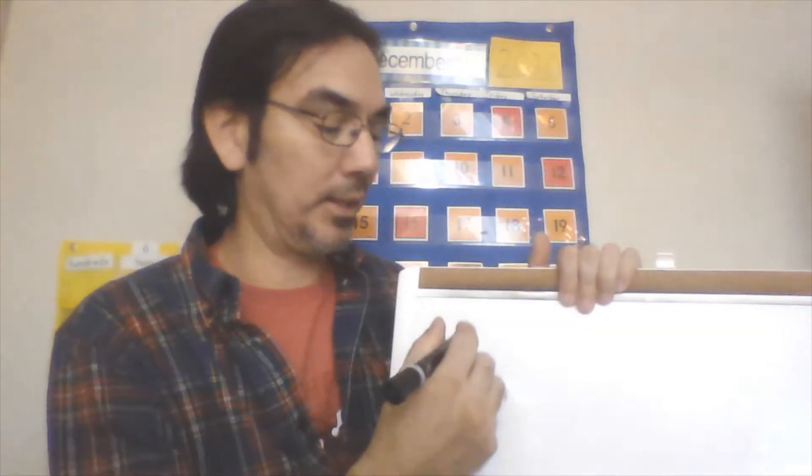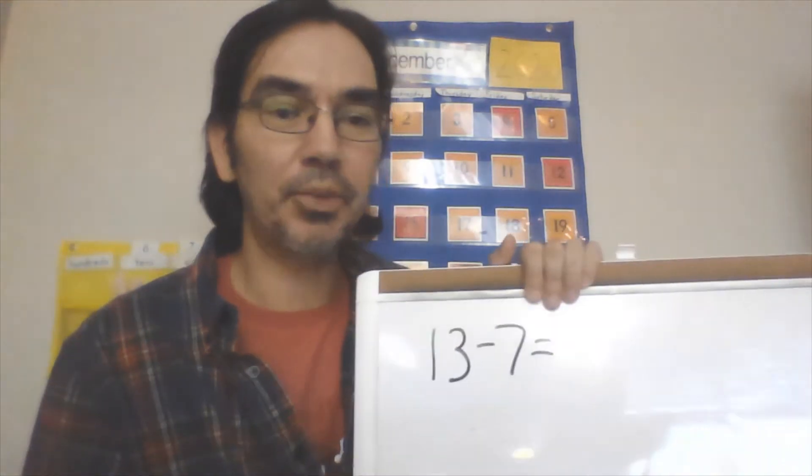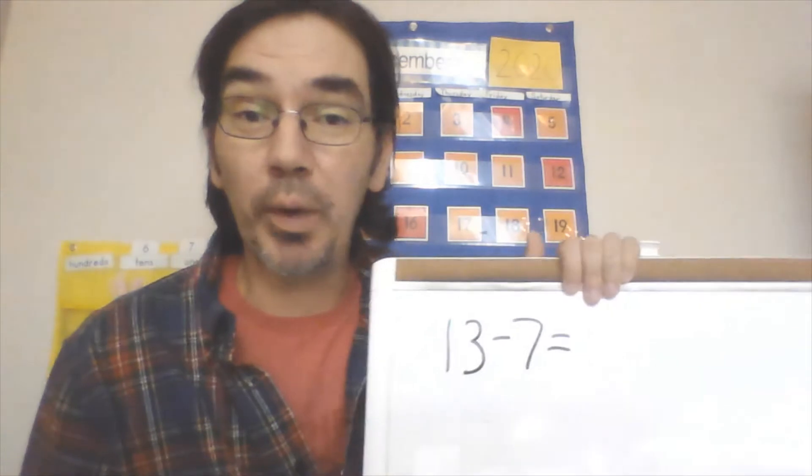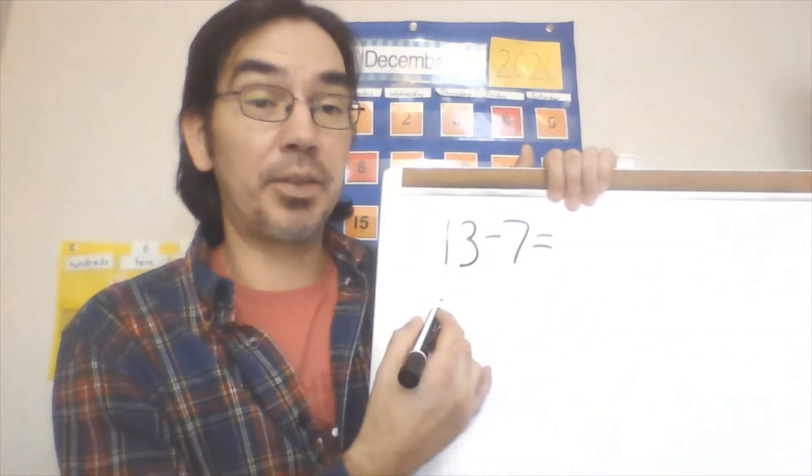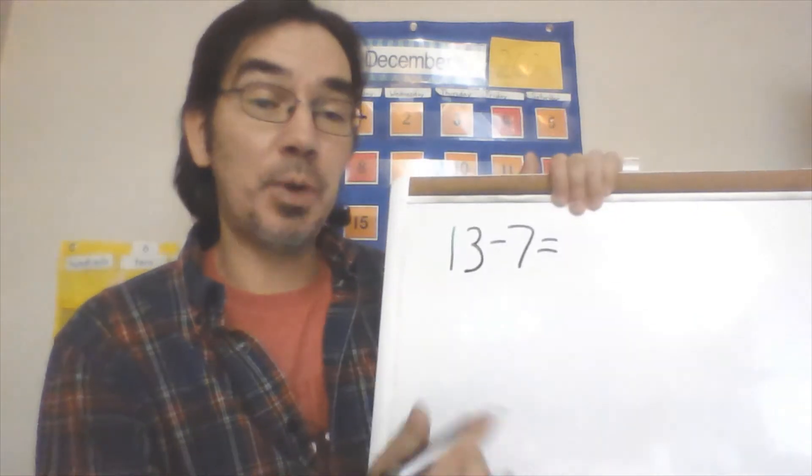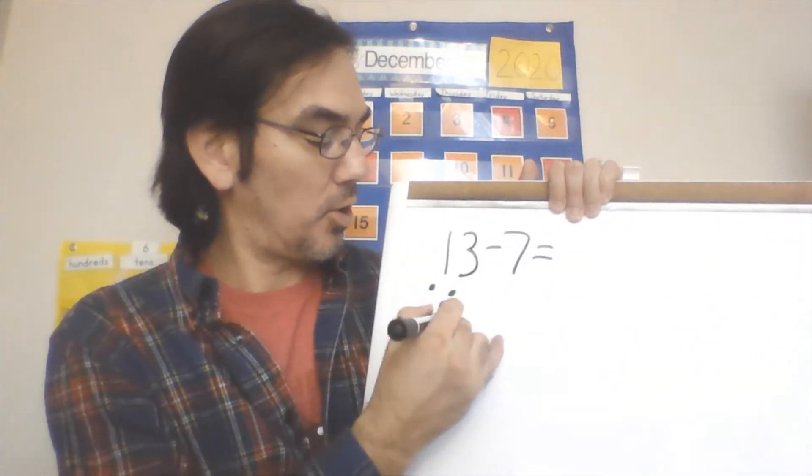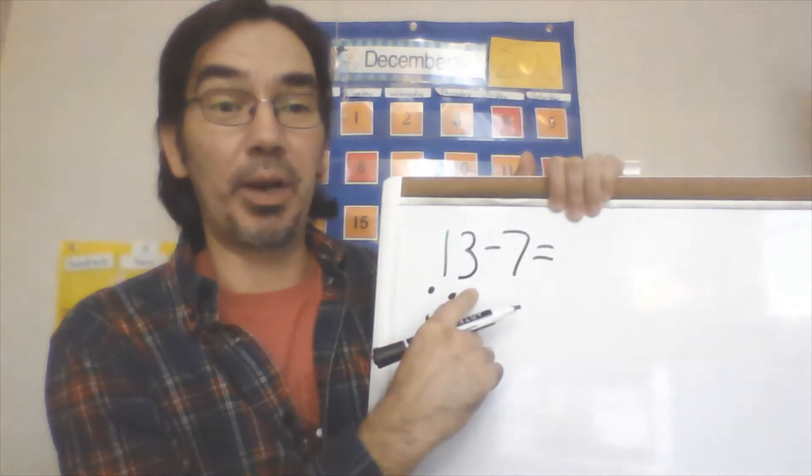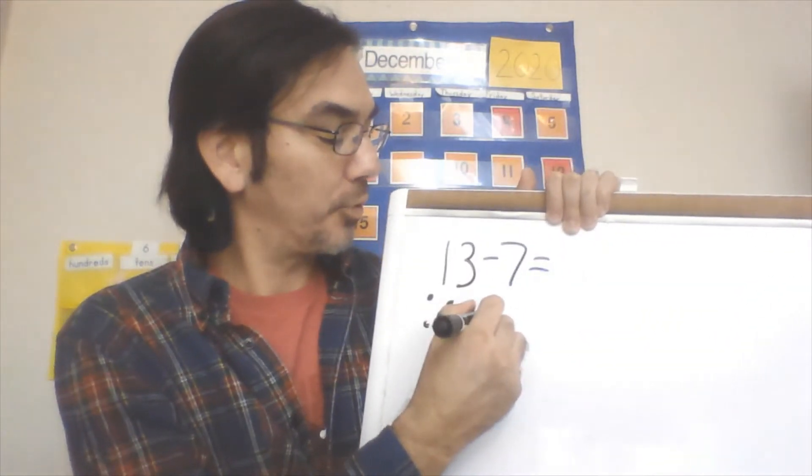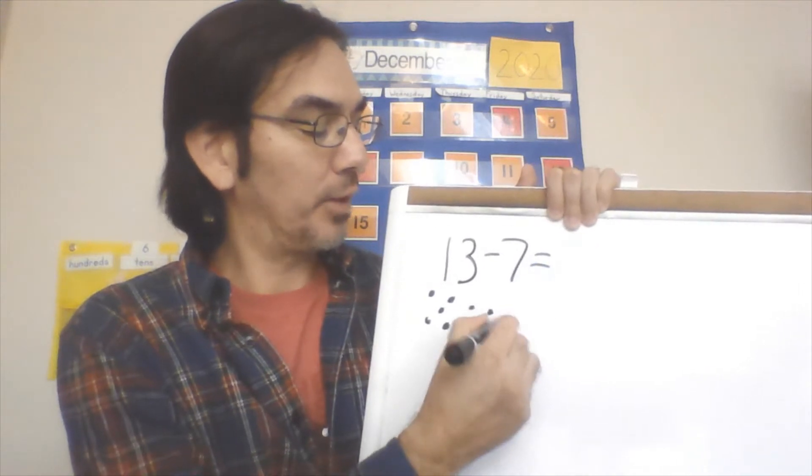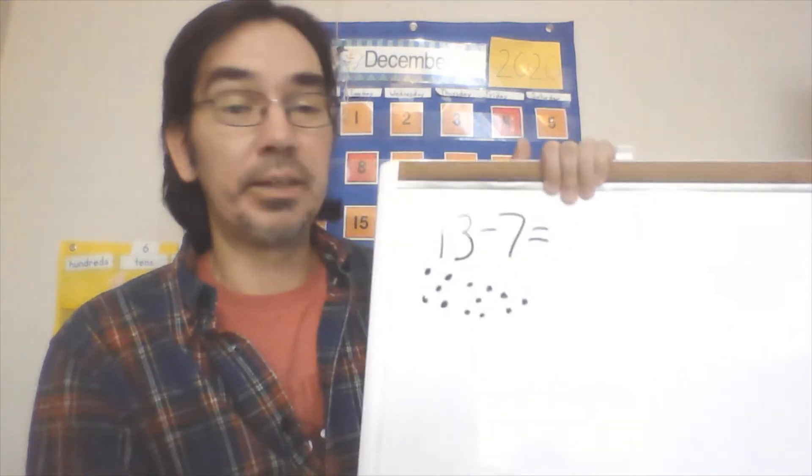Let's get down to it. We learned a couple of different ways to do subtraction—a couple different strategies. We're going to practice those right here. First we need a problem. How about 13 minus 7? One way we tried was with dots. With dots and subtraction, we draw all of them—this is the biggest number—and then we take away from that total. So there's 10, 11, 12, 13. Now how many am I taking away?